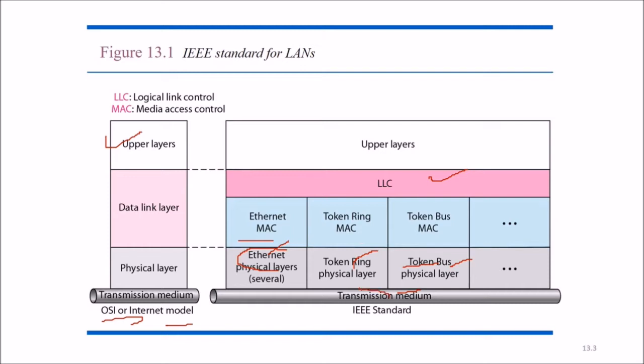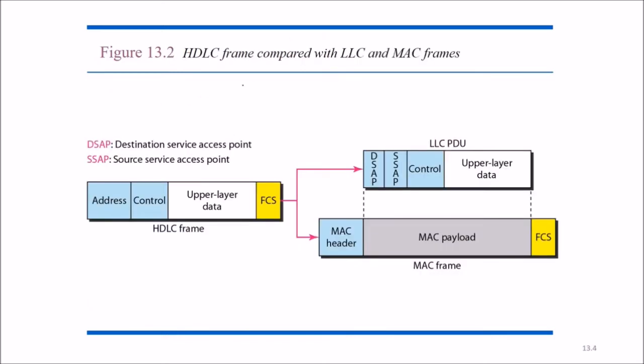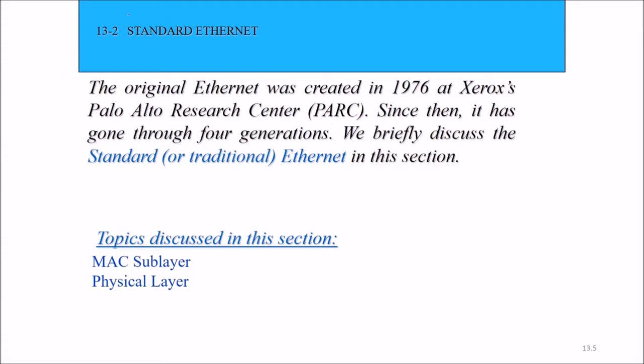As per the IEEE standard, the HDLC frame compared with the LLC and MAC frame. The HDLC frame consists of the address, the control, the upper layer data, and the FCS. This contains the DSAP, destination service access point, and SSAP, source service access point, along with the control and upper layer data, while the MAC frame has MAC header, the MAC payload, and FCS.